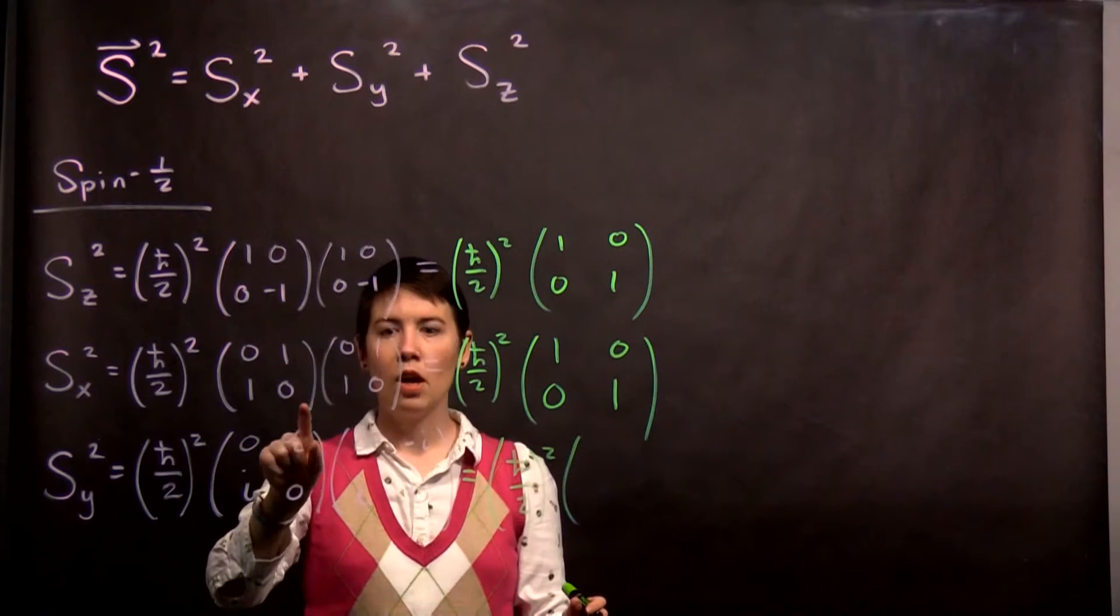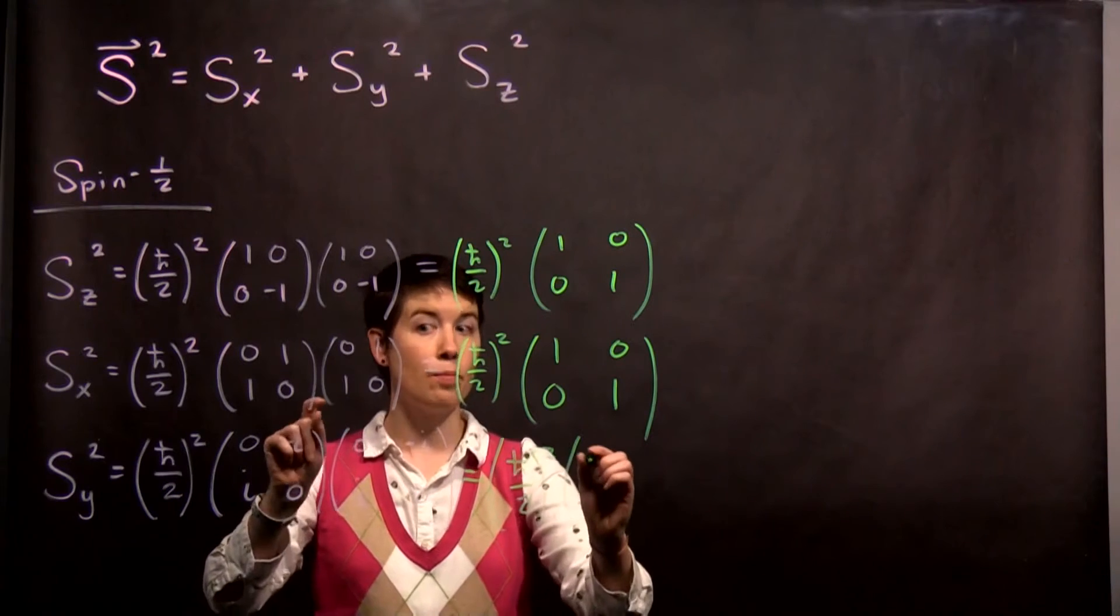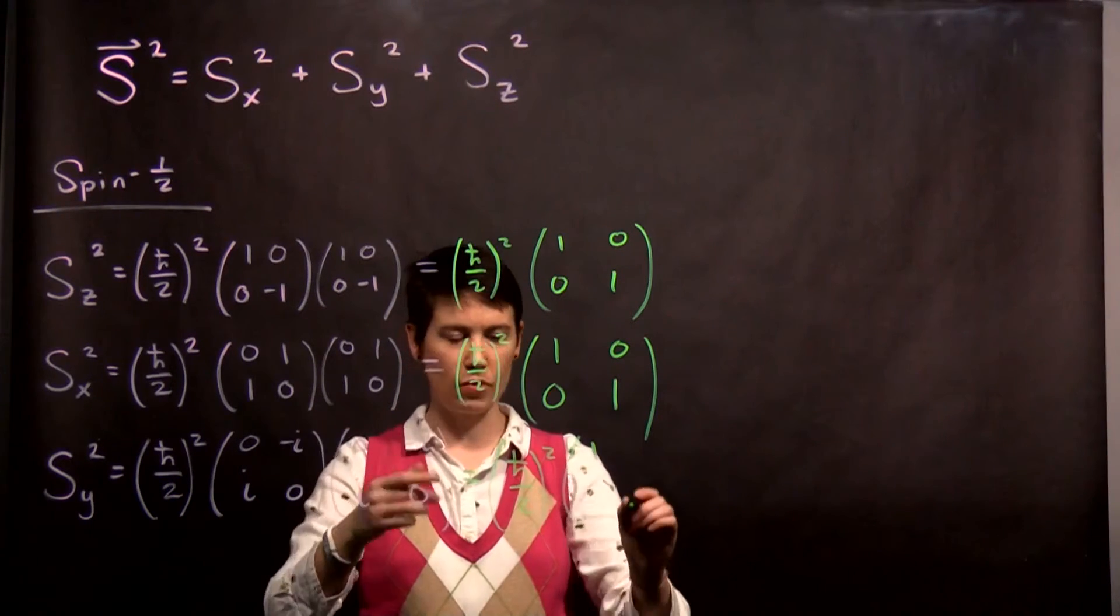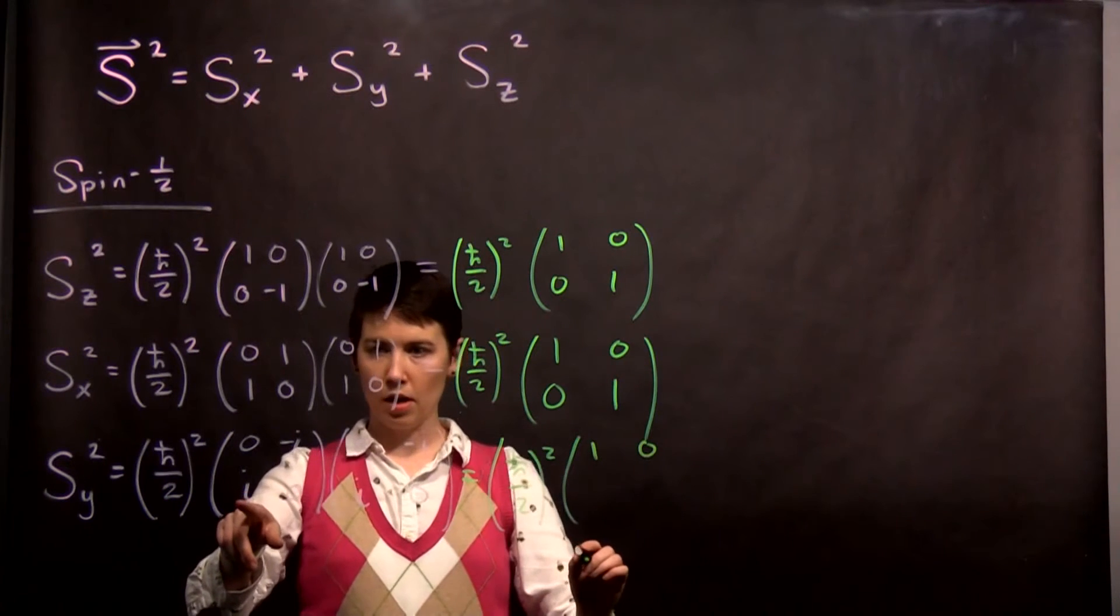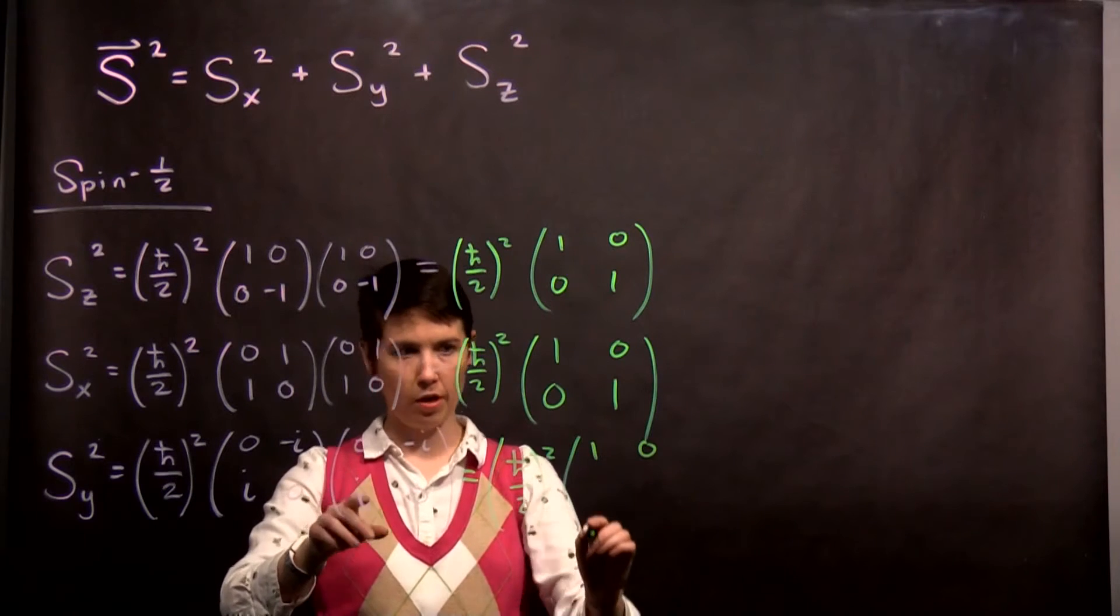So, zero times zero is zero, plus i times i is negative one, but then I have a minus sign. That makes it positive one. Then this one, zero times negative i, zero times negative i, zero. This one, i times zero is zero, zero times i is zero. Okay, good.